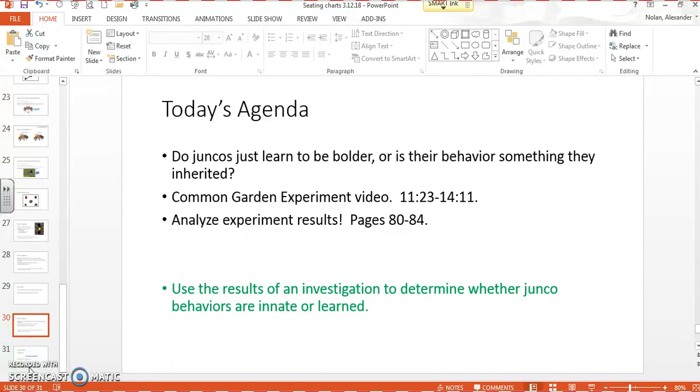What I want to clue you in about is the methods that we started to look at for our juncos. So our central question is, why are these populations different? We've been moving toward understanding that there's behavior differences in juncos. We see that there's juncos at the UCSD campus that will let people get very close, whereas the mountain juncos won't really do that. They're much more skittish. They're going to fly away sooner. So our question now is, do juncos just learn to be bolder, or is their behavior something that they inherited?